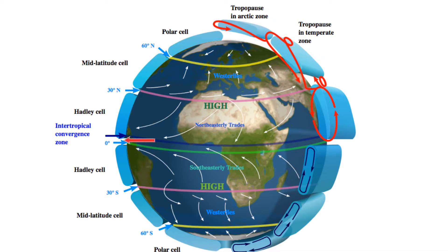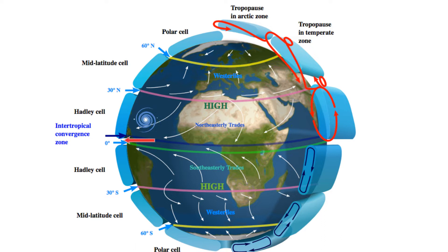The hurricane will rotate in a counter-clockwise fashion in the north due to the Coriolis effect. The Coriolis effect is caused by the earth's rotation and curves air in the northern hemisphere to the right.